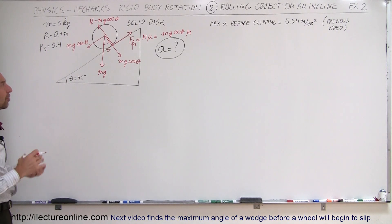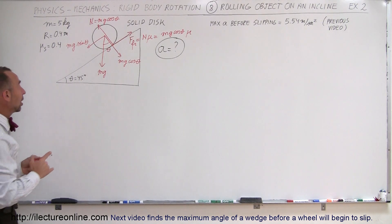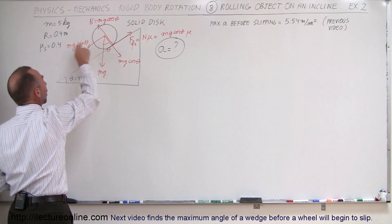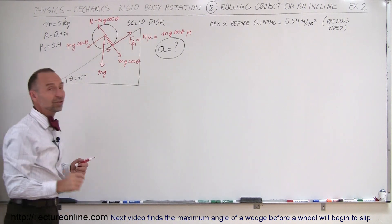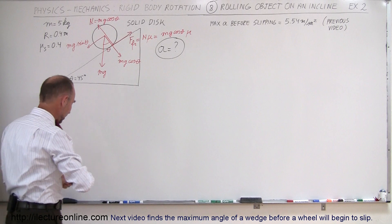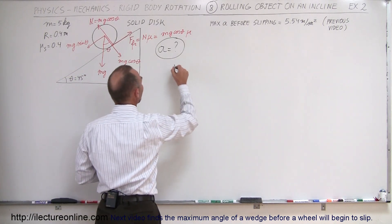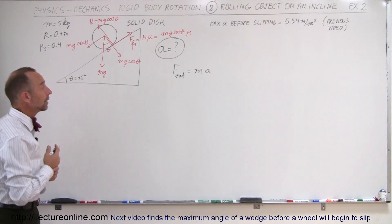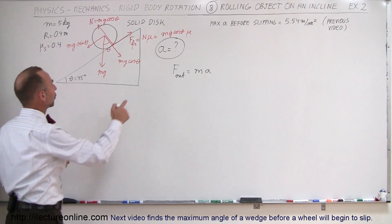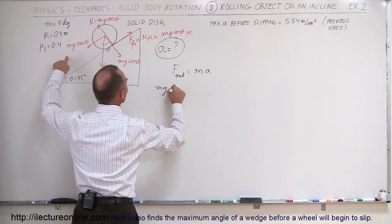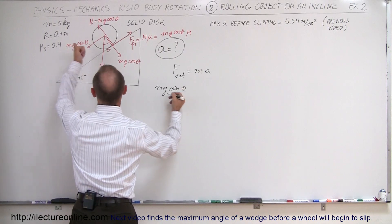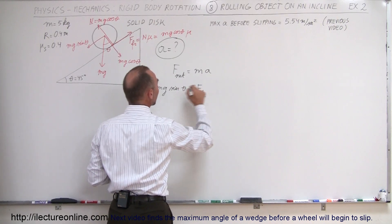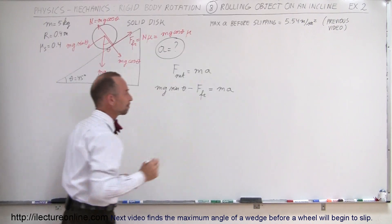So how do we solve this problem? We use Newton's second law: F = ma. The net force pushing the disc down will cause the disc to accelerate. So F_net = ma, where the net force equals mg sine θ pulling it down the incline minus the friction force acting in the opposite direction, and that equals ma.